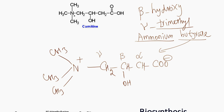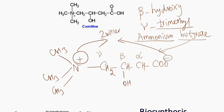Beta-hydroxy-gamma-trimethyl-ammonium-butyrate. If you notice, you can see that it is a zwitterion — one positive charge and one negative charge. So at physiological pH, carnitine will be a zwitterion. You can also notice that it is a quaternary ammonium compound.